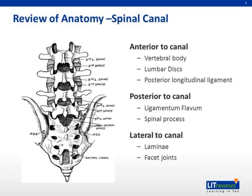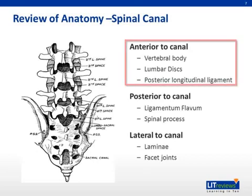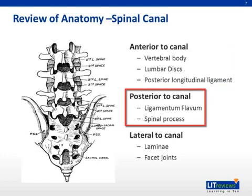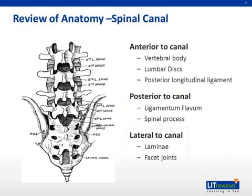Let's review spinal anatomy. The spinal canal is bordered anteriorly by the vertebral bodies and posterior ligaments. The posterior border of the spinal canal is made up of the spinal process and the ligamentum flava. The lateral borders are made up of the vertebral laminae and the facet joints.